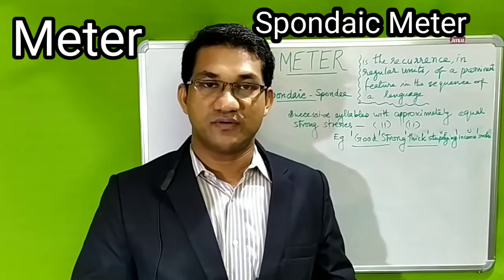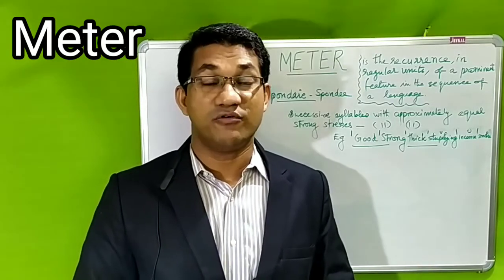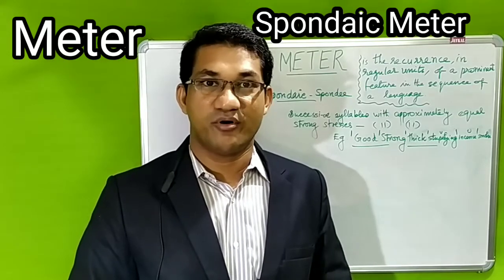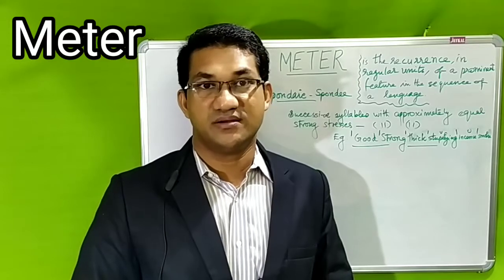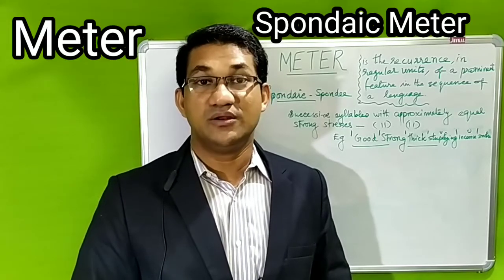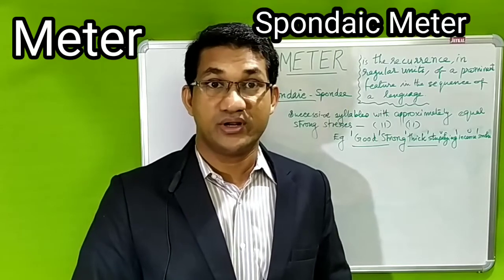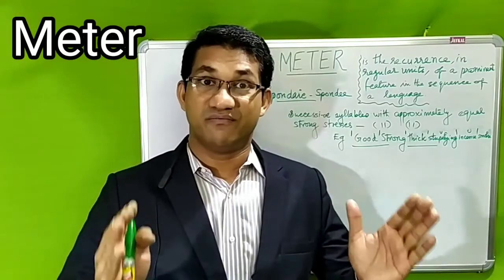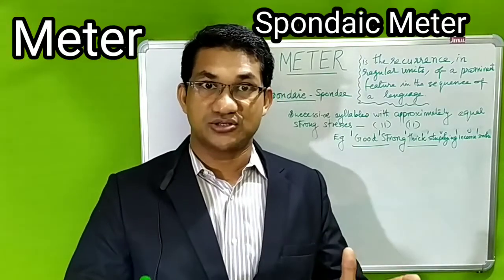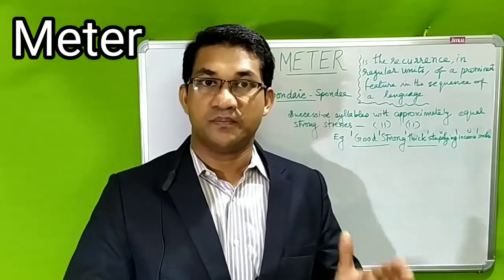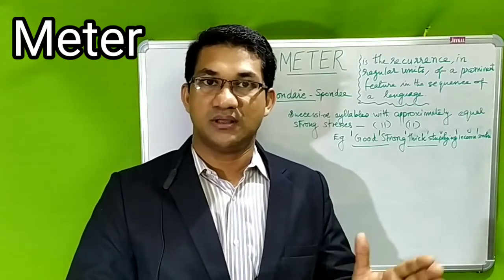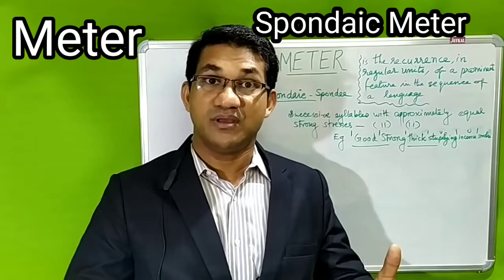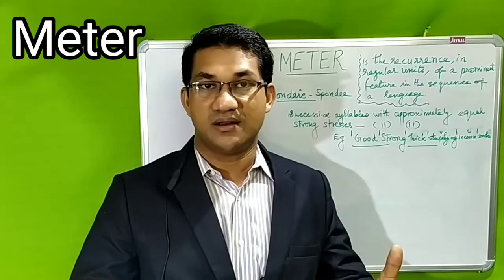We know that poetry is of course the spontaneous overflow of powerful emotions recollected in tranquility. This is the definition of poetry by William Wordsworth, the greatest Romantic poet. But we know that poetry is not just emotion — it has a beautiful and perfect structure, and that structure is achieved through stanzaic pattern, metrical arrangement, and of course rhyme and rhyming lines.